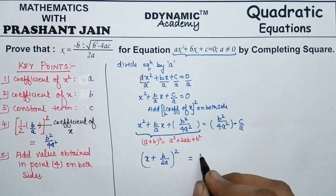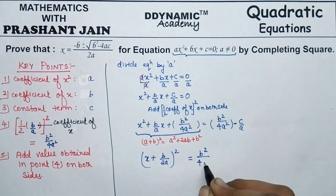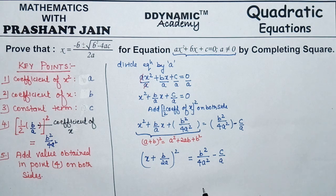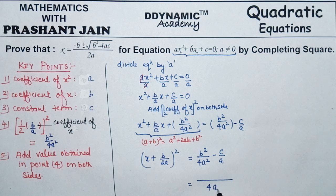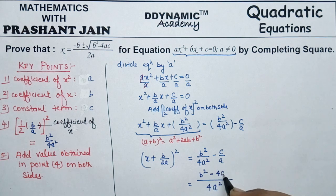On the right-hand side we have b²/(4a²) − c/a. Taking the LCM of 4a², b² stays as it is, and the term c/a becomes 4ac/(4a²). So the right-hand side becomes (b² − 4ac)/(4a²). We now have a perfect square on the left-hand side.